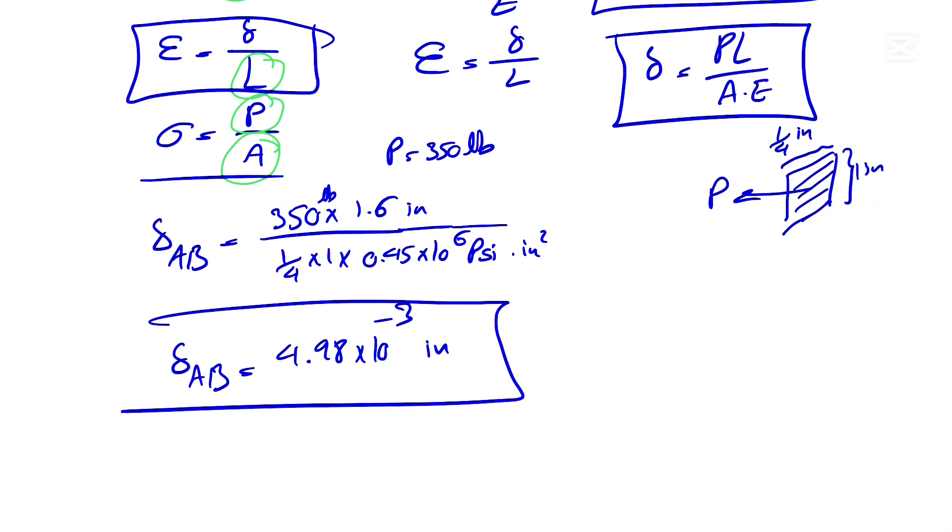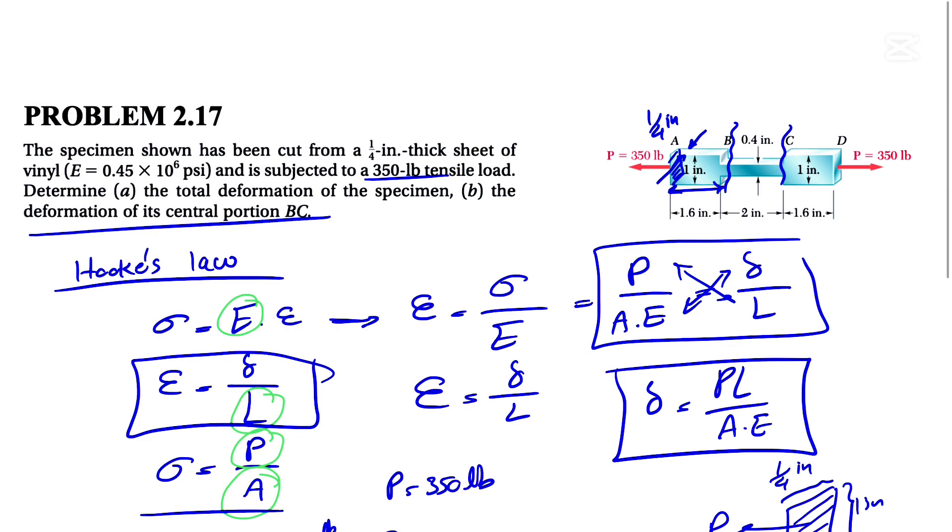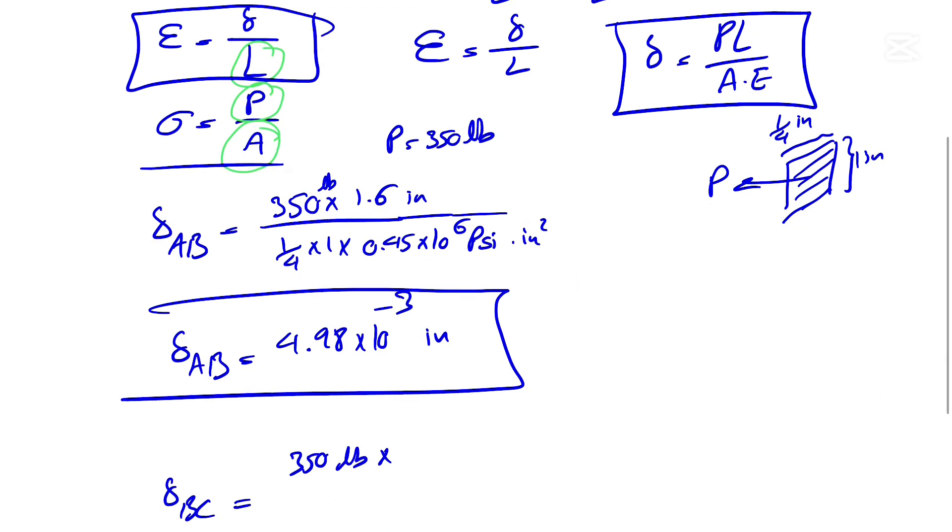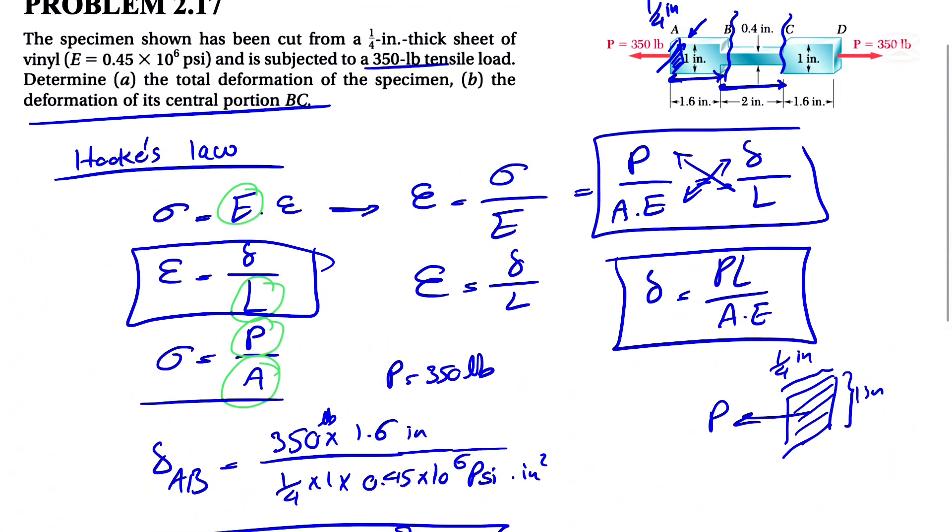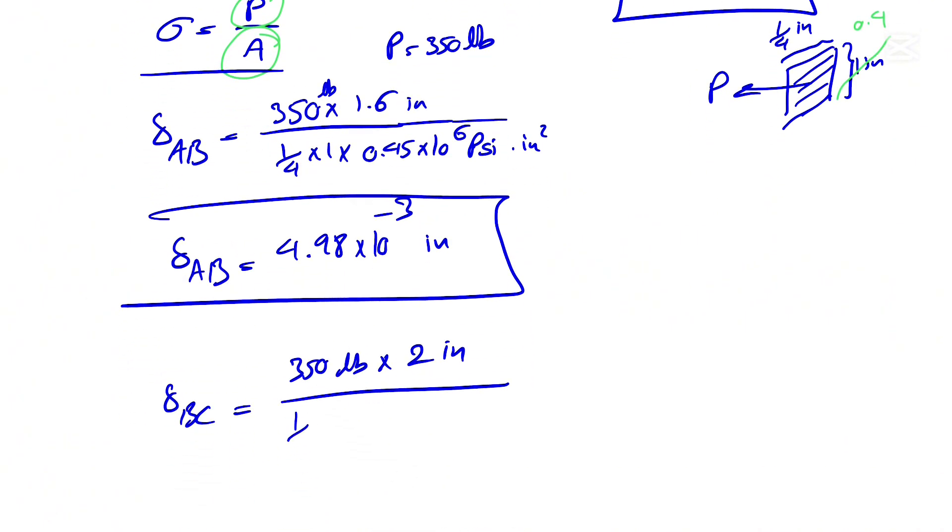Let's go to the BC section. We have the same formula, same force 350 pounds. Let's look at the length of BC, so this time we have this length, it's 2 inches. And the area is also different. The area would be what we have here, so our rectangle would be a little bit smaller, same thickness, and the other side which here we have is 0.4 inches. So the area would be different, we will have one quarter times 0.4, and Young's modulus is the same, 0.45 times 10 to the 6 psi.